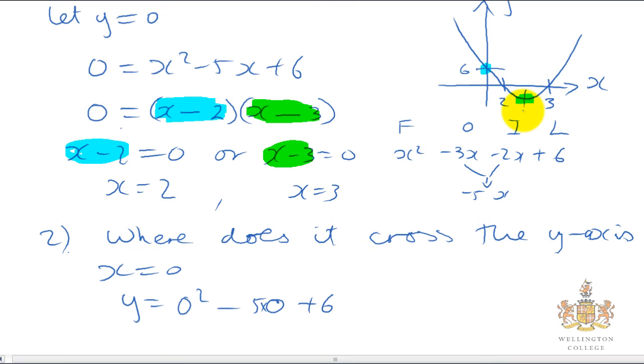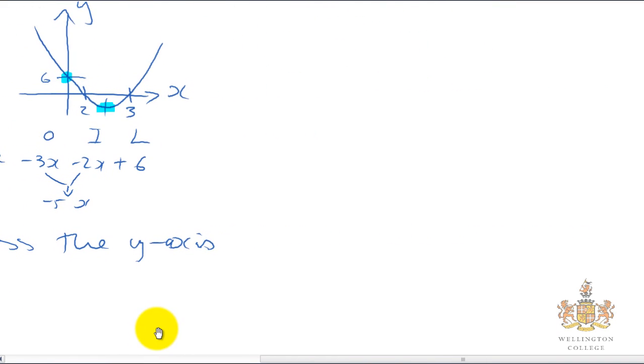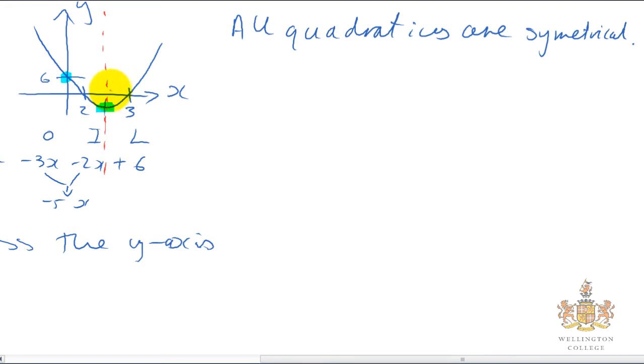Now we just want to find out this value. Where's the minimum point? All quadratics are symmetrical. So if they're symmetrical, then the minimum point must lie on the line of symmetry. And if we know it crosses at 2 and 3, this is going to be, this line of symmetry is going to be the line x equals 2.5, halfway between 2 and 3.